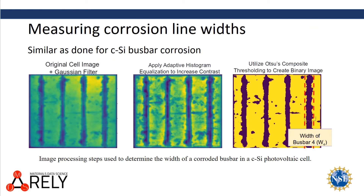Here's an example of how we measured corrosion line widths on photovoltaic cells. The process included filtering of the image, an adaptive histogram, and binarization of the image so that we could measure the width of the corroded area.